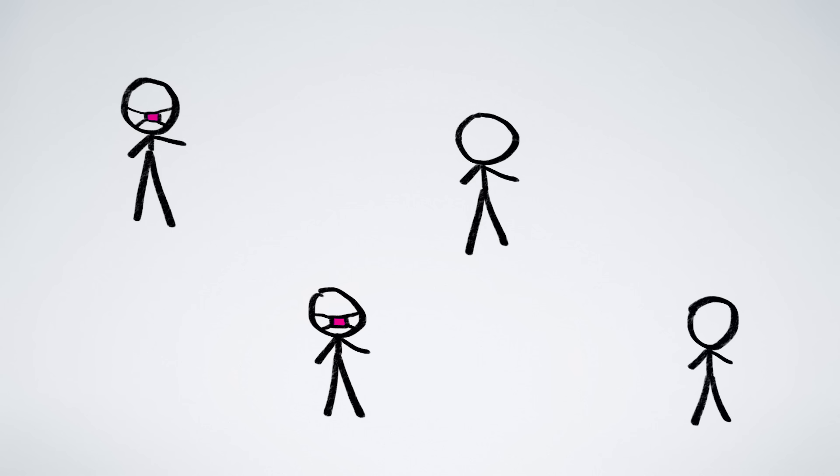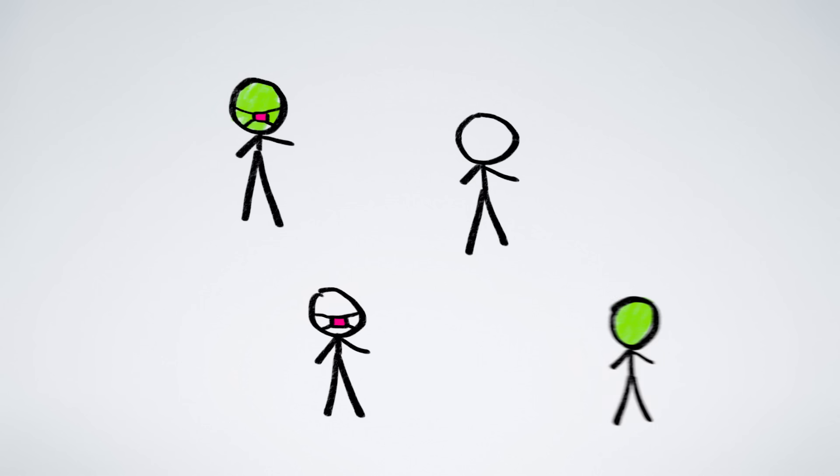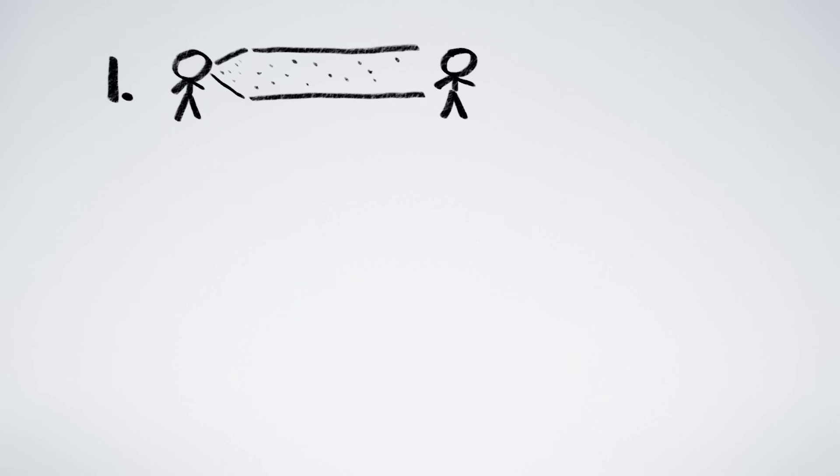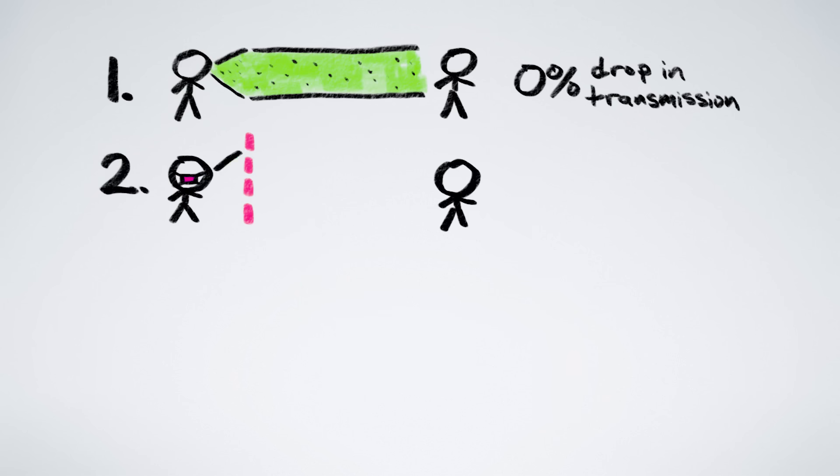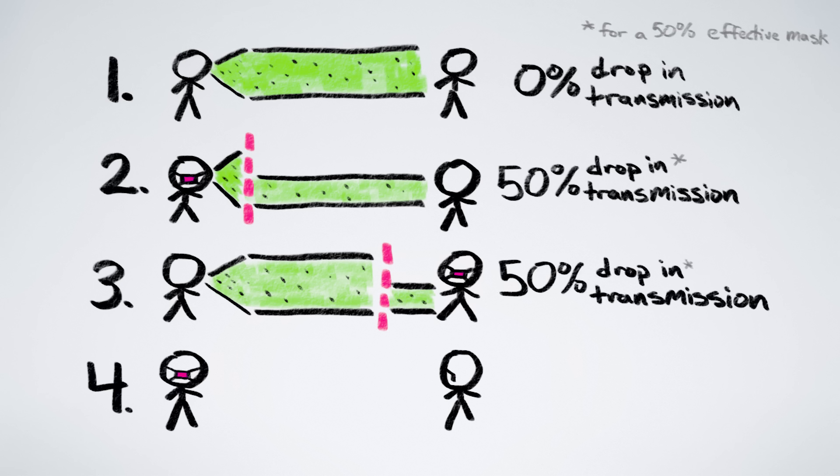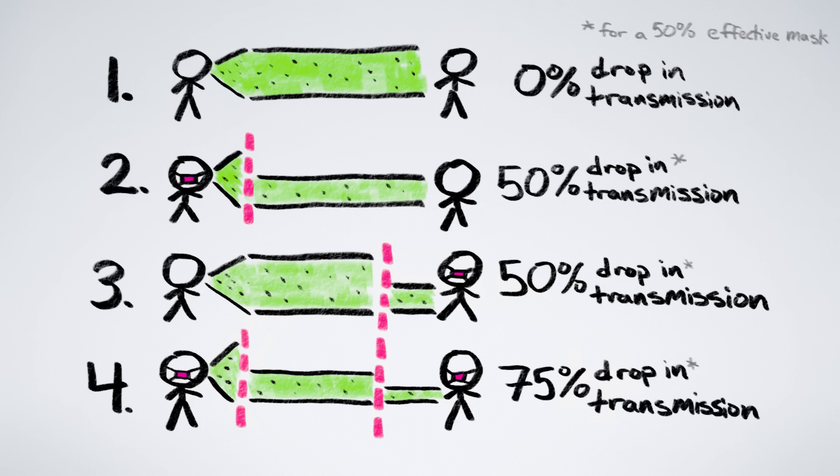But in reality, not everyone will wear a mask. So when a contagious person encounters a susceptible person, there are in fact four possible routes of infection. In the first route, neither person is wearing a mask, which means there's no reduction in disease transmission. In the second route, only the contagious person is wearing a mask, and so for a 50% effective mask, disease transmission drops by 50%. In the third route, only the susceptible person is wearing a mask, and again disease transmission drops by 50%. And in the final route, where both the contagious and susceptible people are wearing masks, disease transmission gets cut in half twice, aka it drops by 75%.